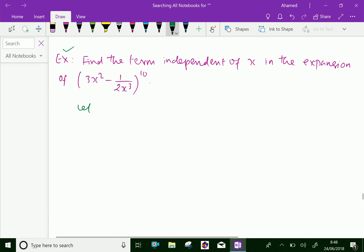Now, let T_(r+1) be the term independent of x. T_(r+1) equals the general term of binomial theorem: nCr times the first term (3x²)^(n-r) into the second term (-1/(2x³))^r.